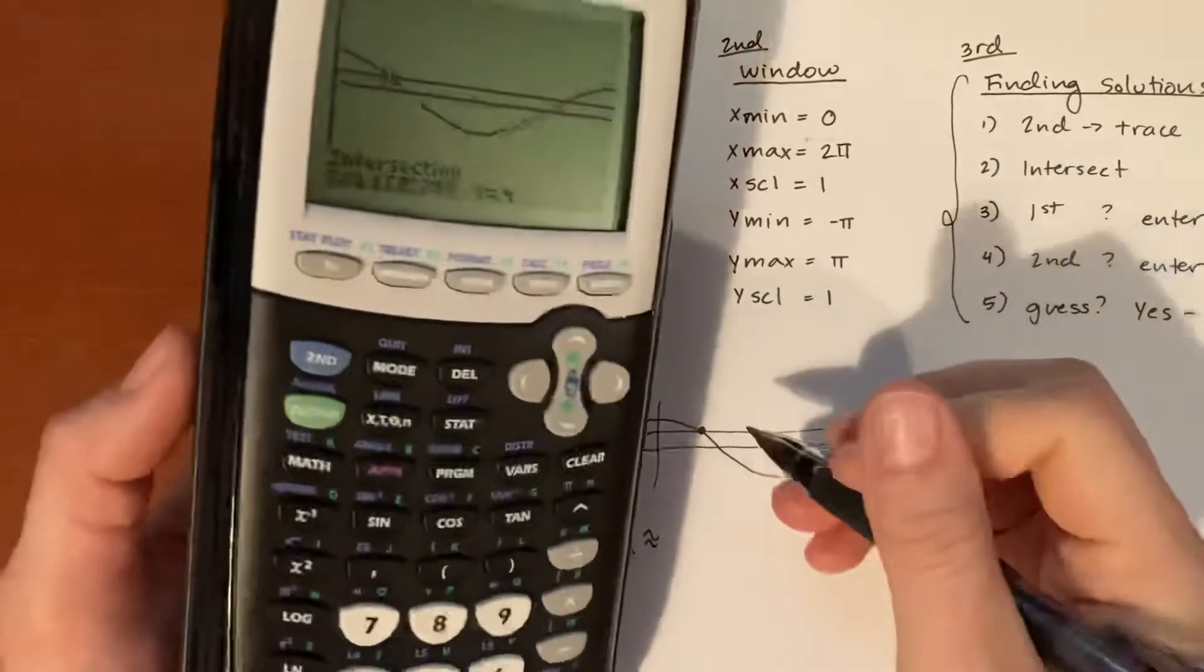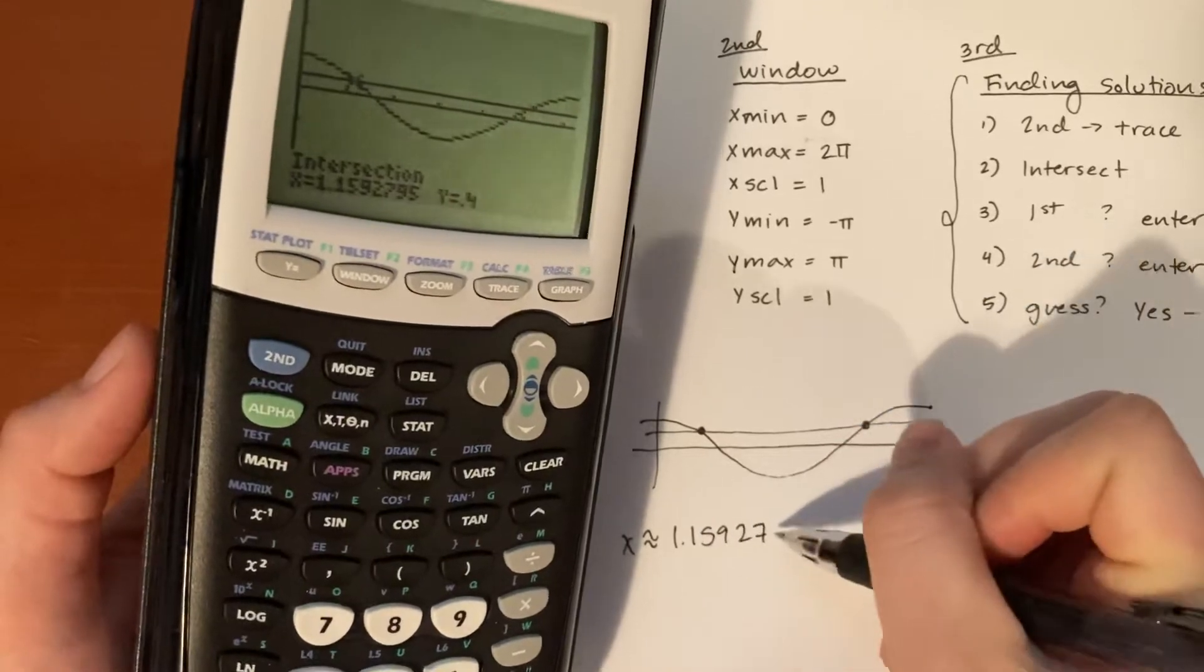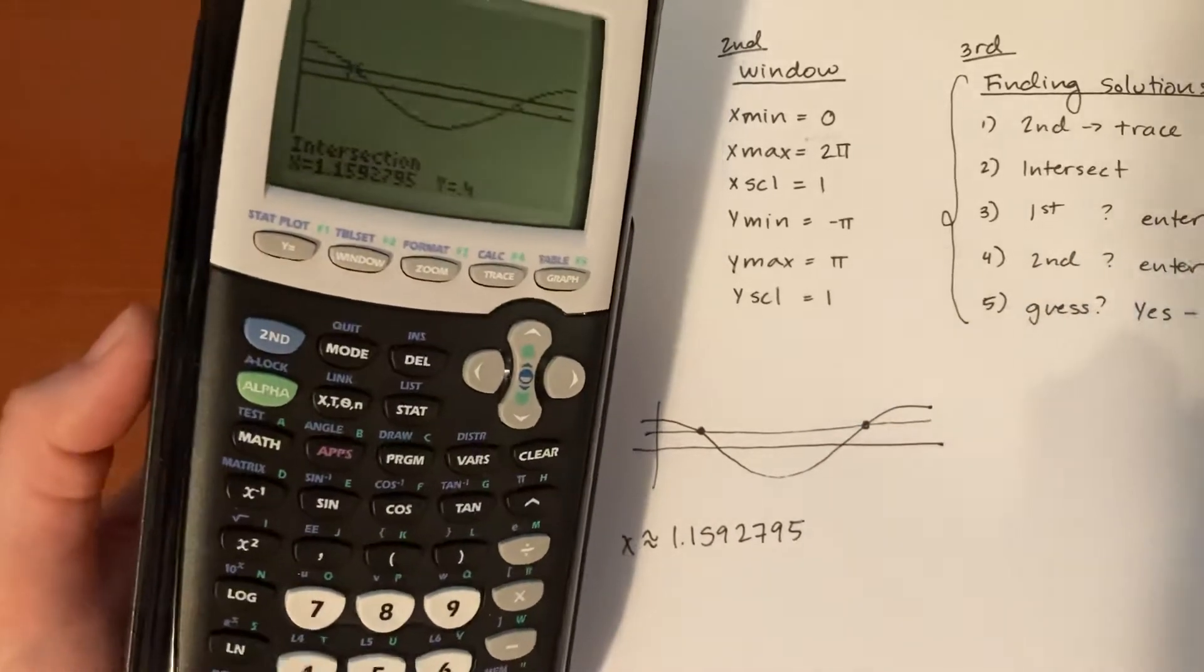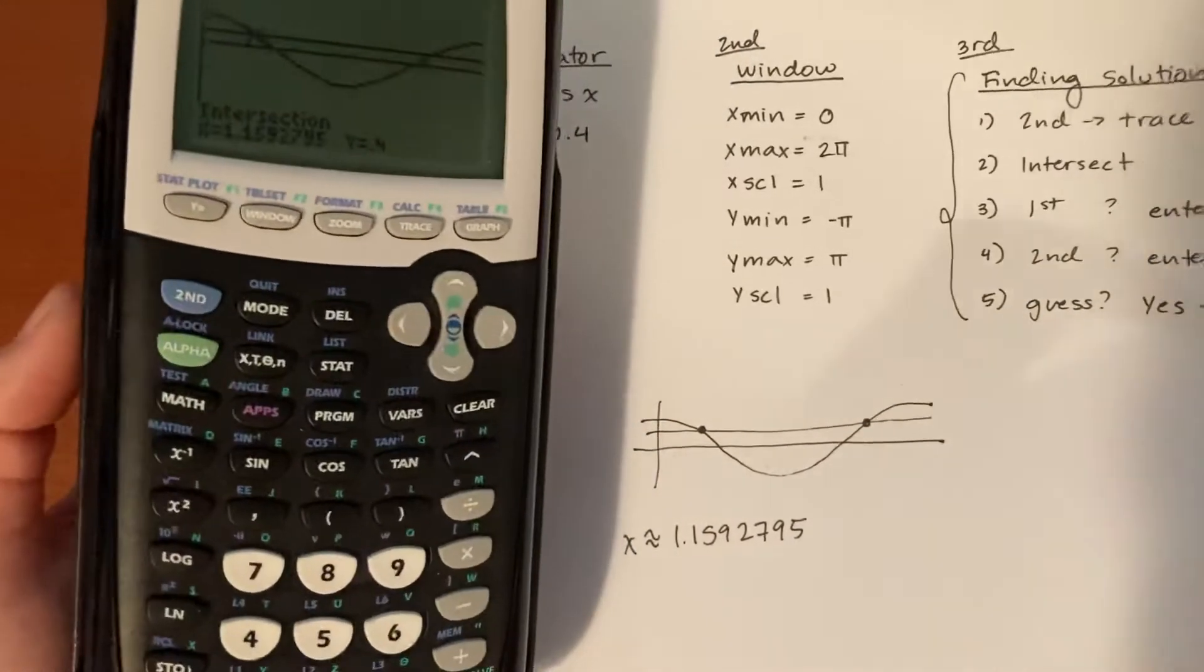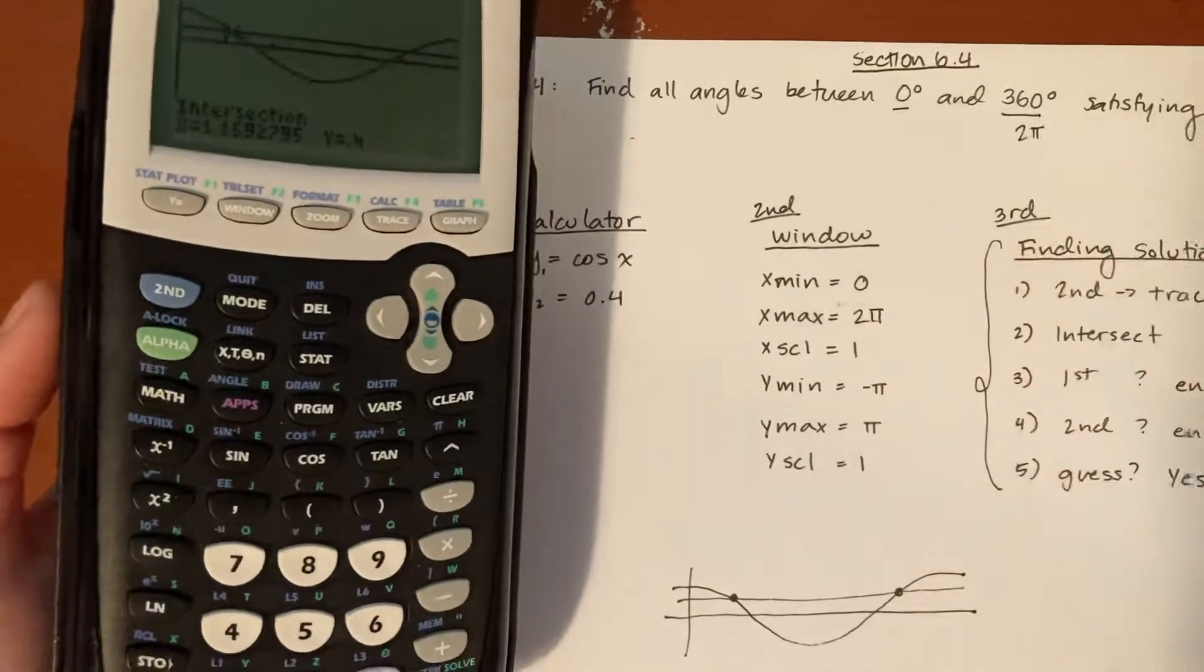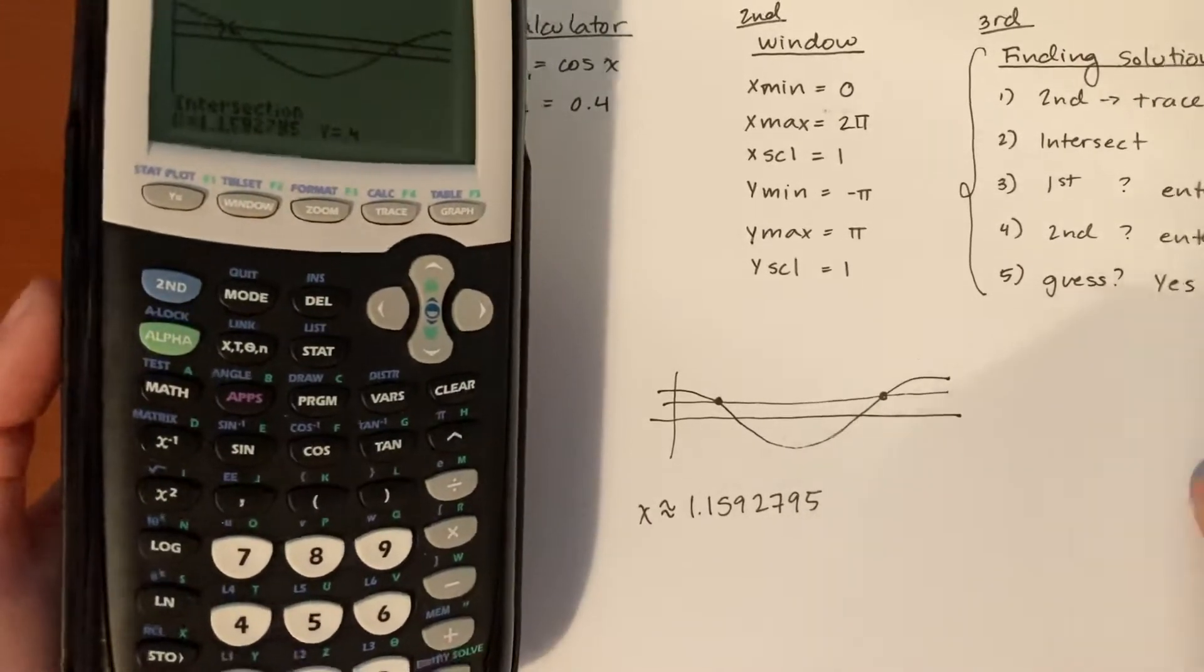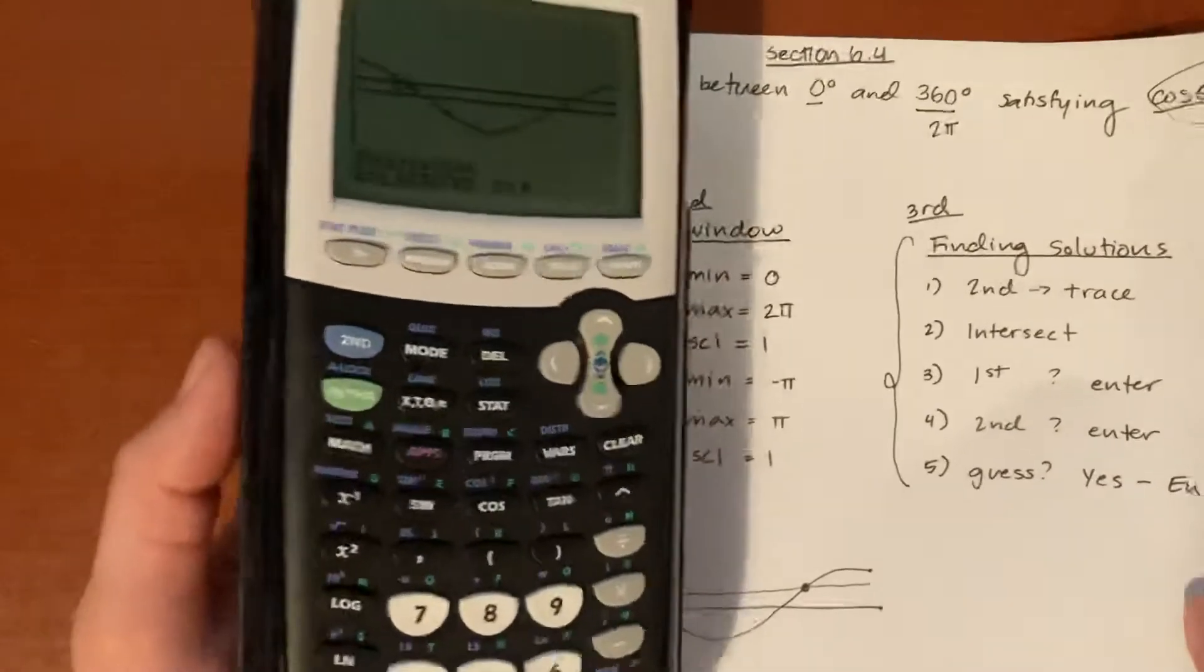So now at the moment I get the answer of x is approximately equal to 1.1592795, which if you recall, we are given... we're trying to find angles in degrees, and at the moment this is not degrees, this is an answer in radians. So we're going to have to convert that, but let's find the other one first before we work on the conversions.